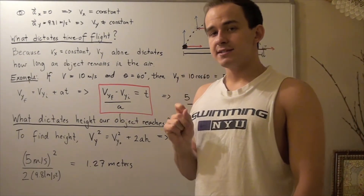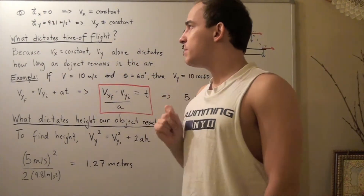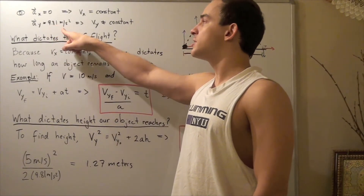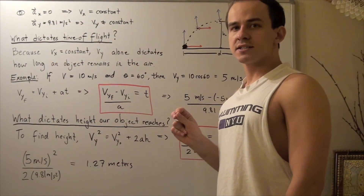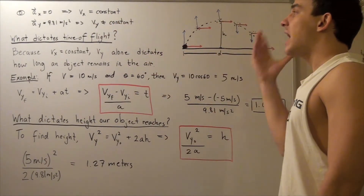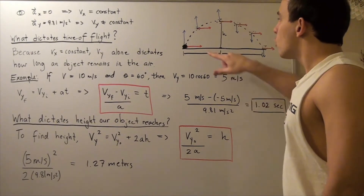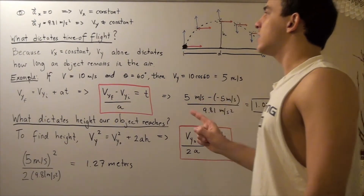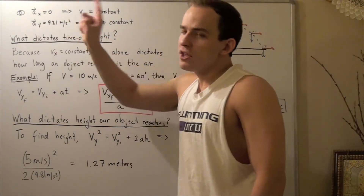It is always the case that our acceleration along the x-direction is zero meters per second squared. And it will always be the case that our acceleration along the y-direction points downward with a magnitude of 9.81 meters per second squared. Because the x-acceleration is zero, our velocity along the x-axis is constant. So if we begin with some velocity v_x, at every point along the path we will have the same velocity in the x-direction.